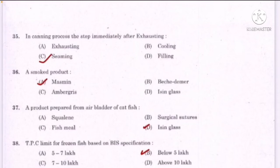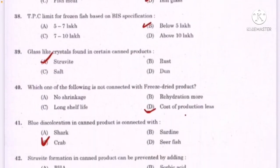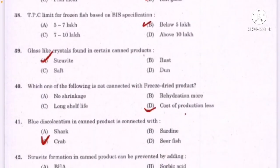A product prepared from the air bladder of catfish — correct answer option D: isinglass. TPC limit for frozen fish based on BIS specification — correct answer option B: below 5 lakh. Glass-like crystals found in certain canned products — option A: struvite.